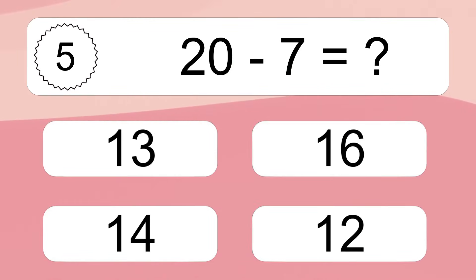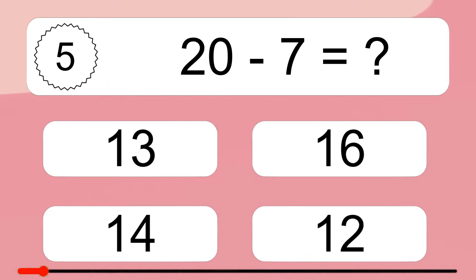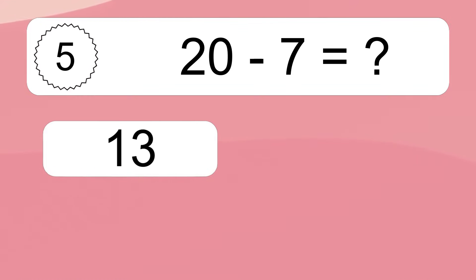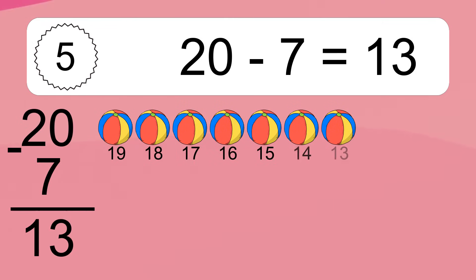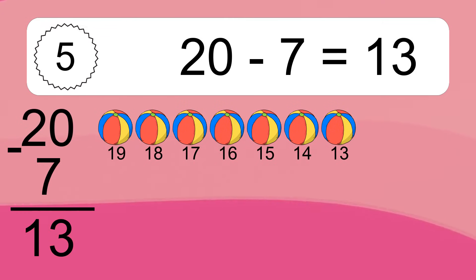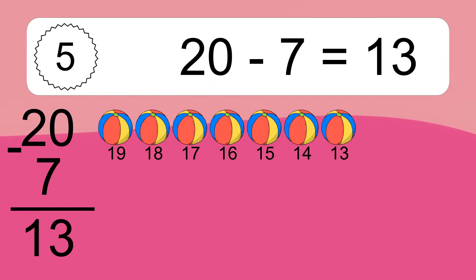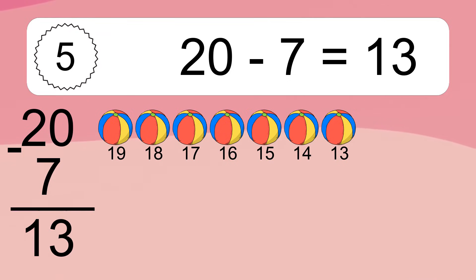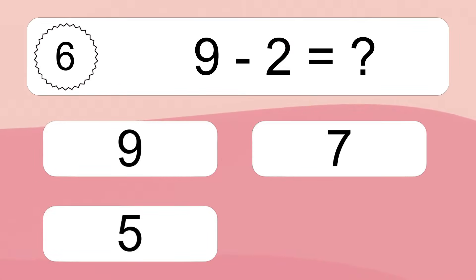20 minus 7 equals what? 20 minus 7 equals 13. Let's count it: 19, 18, 17, 16, 15, 14, 13.